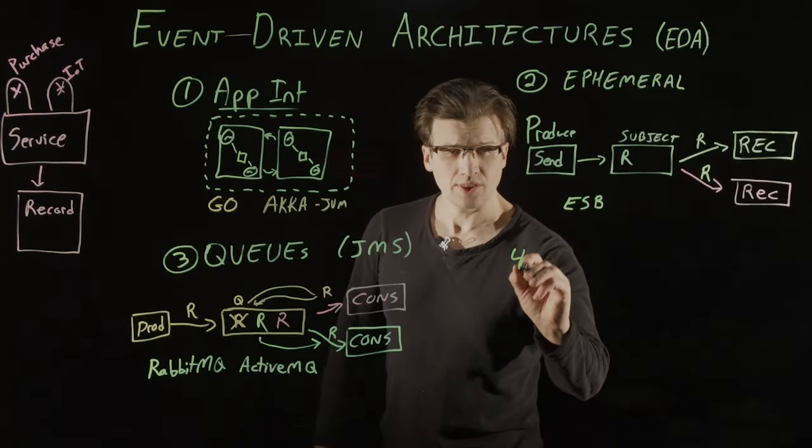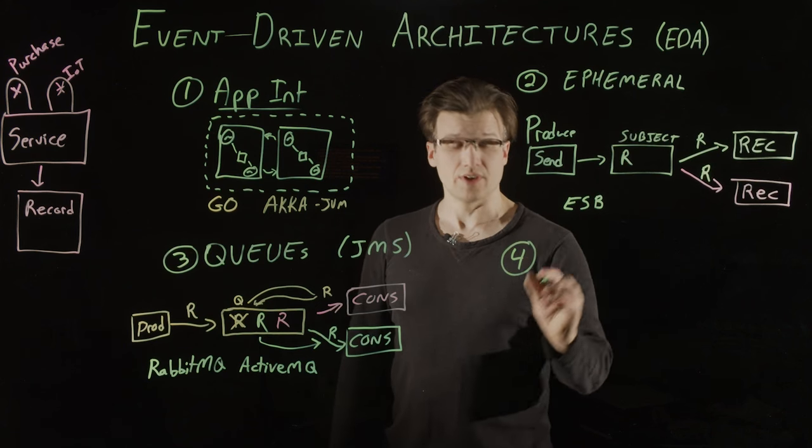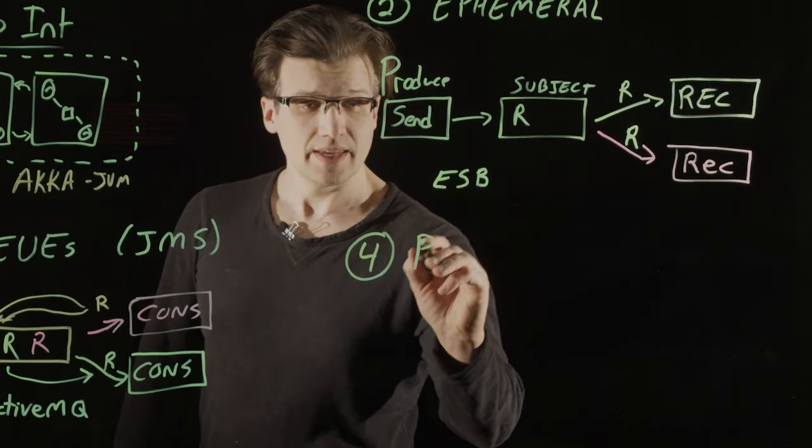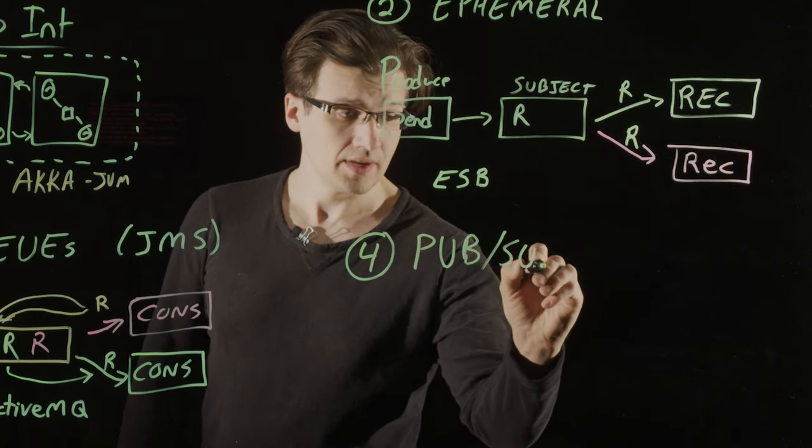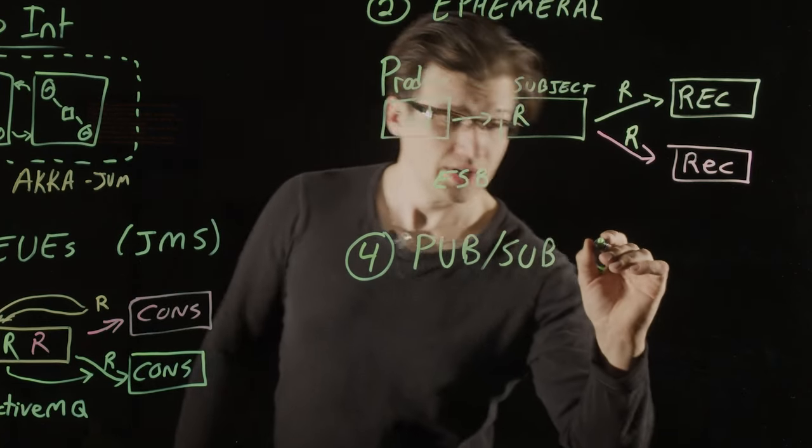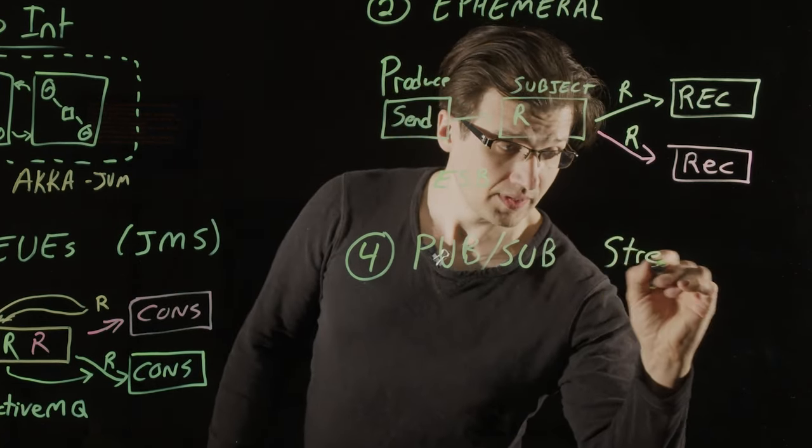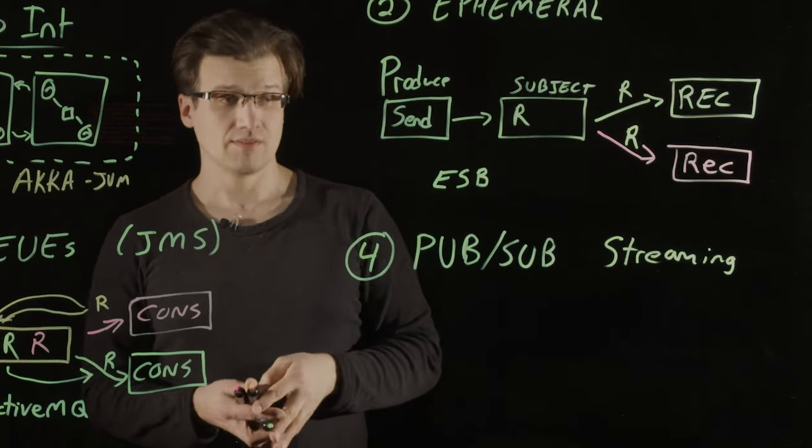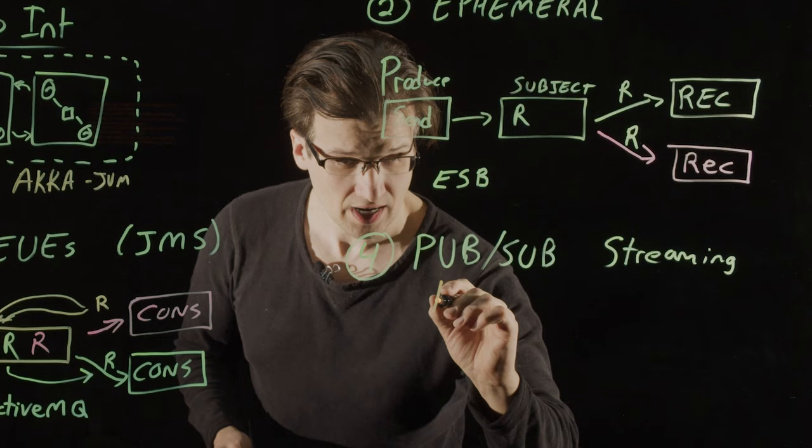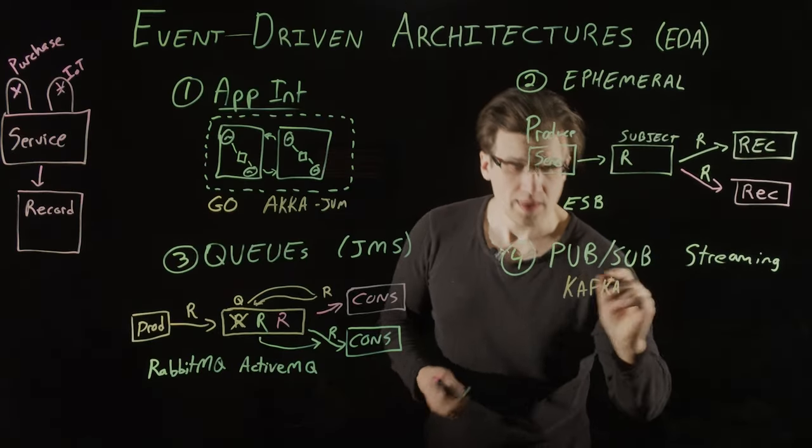Our fourth and final type of event-driven architecture that we're going to look at is known as publish-subscribe, or pub-sub. This is often also called streaming. And one of the most popular candidates for this is Apache Kafka.